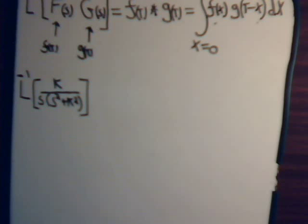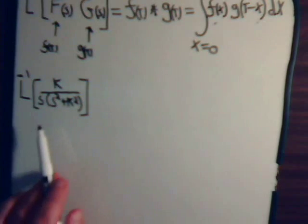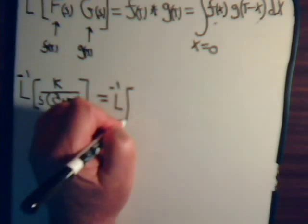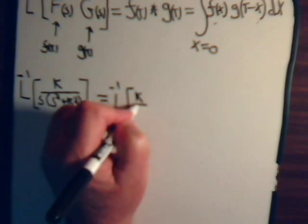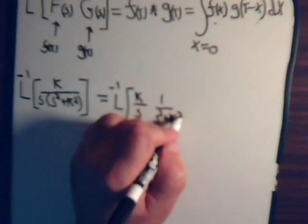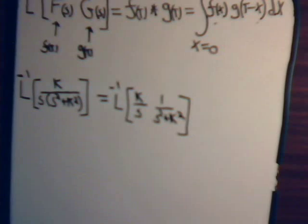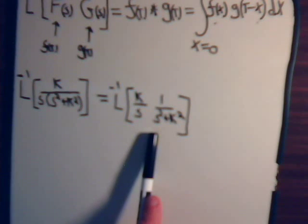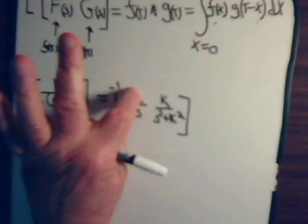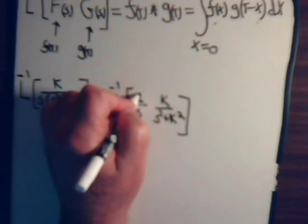We want to know what function this is the Laplace transform of. We can write this as a product: k/s times 1/(s² + k²). But in this form it's not very useful, because being familiar with Laplace transforms, we realize this should correspond to some sort of trig function. If there's an s in the numerator it's a cosine; if there's a k in the numerator it's a sine. So we want to have the k over s² + k² and the 1 over s.